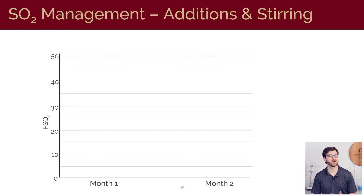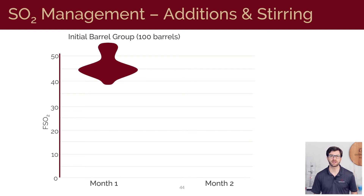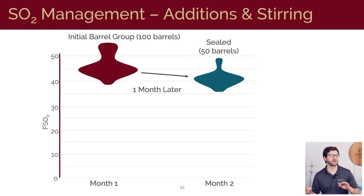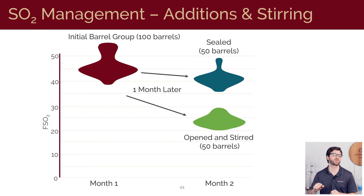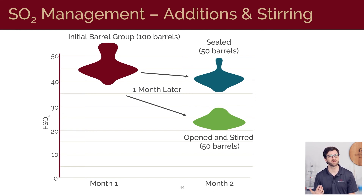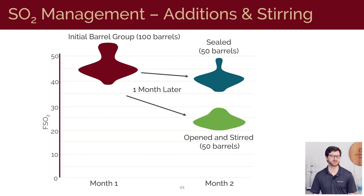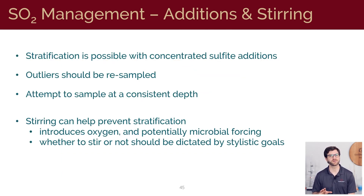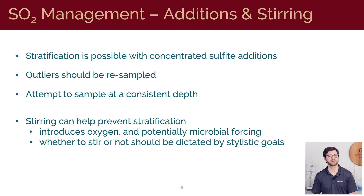However, we've also observed some other impacts from stirring. In one winery study, we performed sulfite additions to 100 barrels — half were left unstirred and sealed, and the other half were opened and stirred vigorously to incorporate the sulfites. The group that was opened and stirred consumed almost 20 ppm more on average of free SO2 than the group that had remained sealed. We hypothesize this is caused by the additional oxygen and potentially microbes that are incorporated and folded into the wine with vigorous stirring. Although stirring does break up sulfite stratifications, there are other factors to consider and stirring should be a contextualized stylistic decision made for each wine.